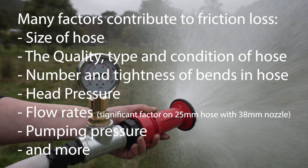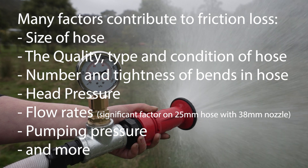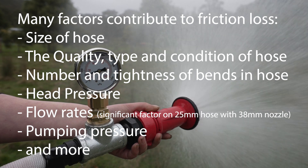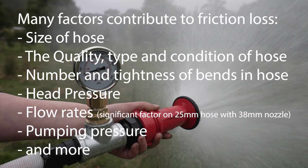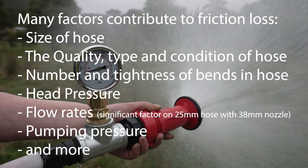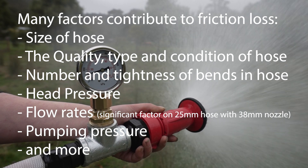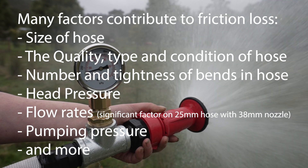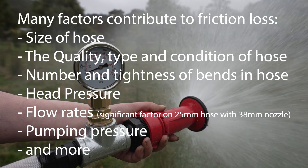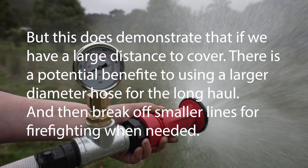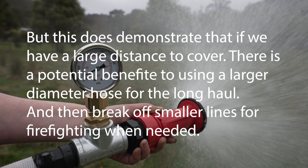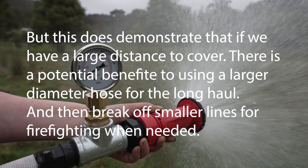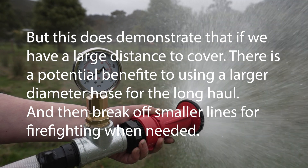There are many other variables that go into friction loss, including the type of hose, the volume of water being pushed through, the condition of the hose, head loss, any bends, hardware, couplings, and various other factors. So this shouldn't be used as a pumping equation guide, but it's useful for understanding the effect of choosing smaller hoses over larger ones. It clearly shows that if we have a long distance to cover, we're much better off using larger diameter hoses for the long runs and then switching to smaller diameter hoses when we actually want to do firefighting.